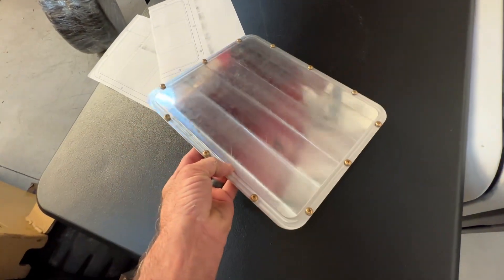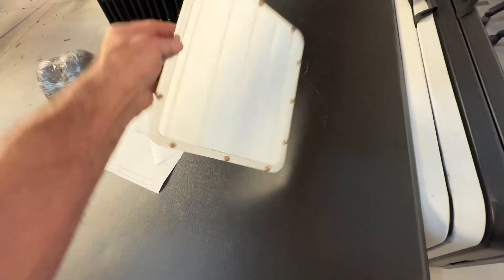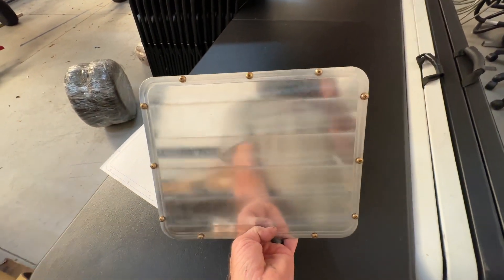Number eight screws are provided with it, and there's a lip all the way around, so when you put that through your hole and put it up towards your airplane and put the screws in, it'll be flush with the airplane.